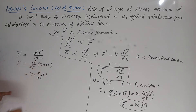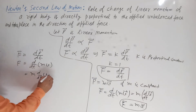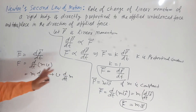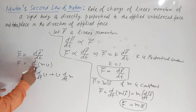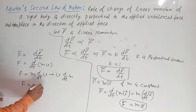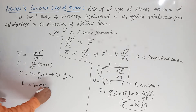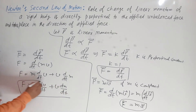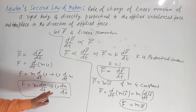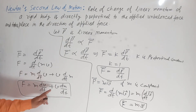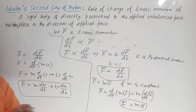Applying the product rule to d/dt(mv), we get F = M·dv/dt + V·dm/dt. So when mass is not constant, force equals mass into rate of change of velocity, plus velocity into rate of change of mass.